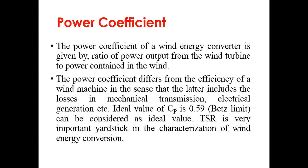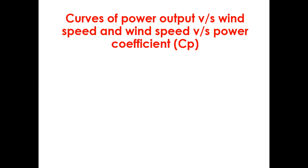The power coefficient of the wind energy conversion system is the ratio of power output from the turbine divided by the power contained in the wind. It differs from the machine's efficiency in that the latter includes losses in mechanical transmission, electrical generation, and converter losses. The ideal value of Cp is 0.59 for a horizontal axis rotor, and TSR is also an important yardstick for characterizing wind energy conversion systems.